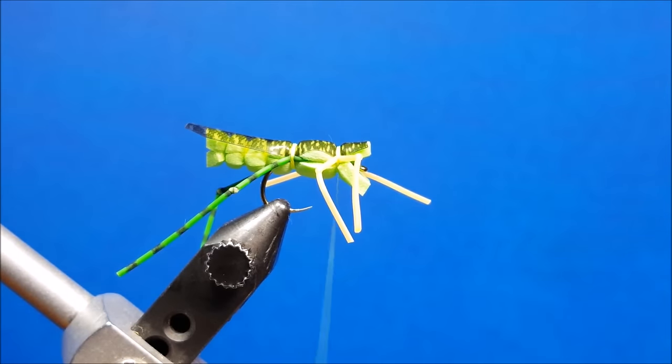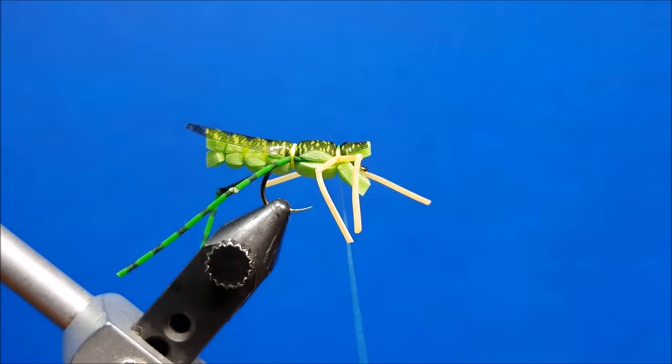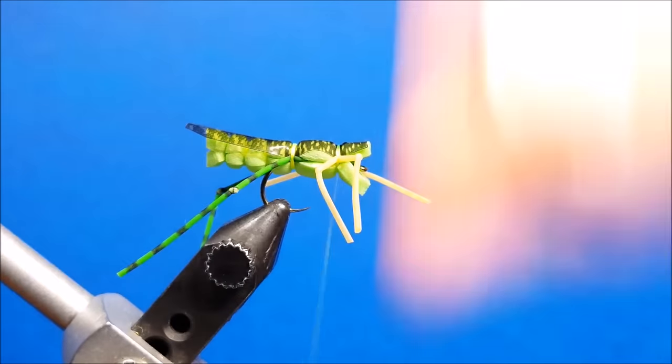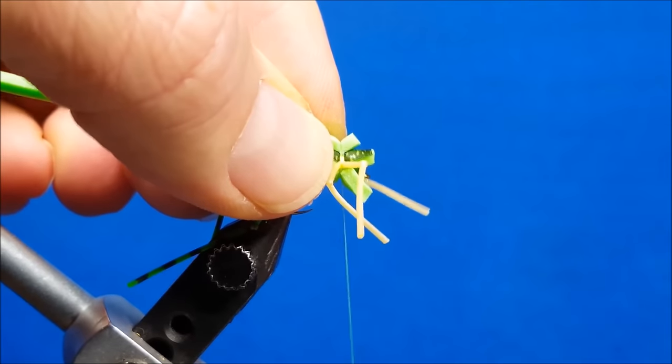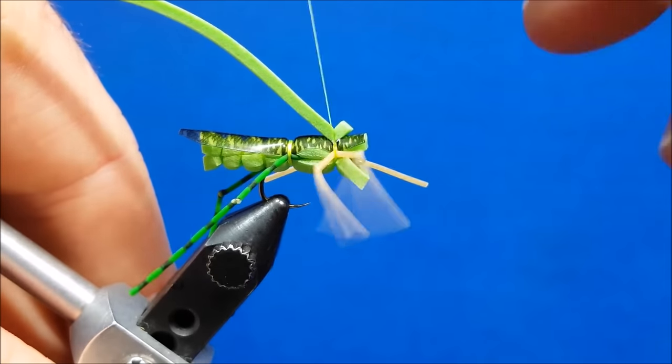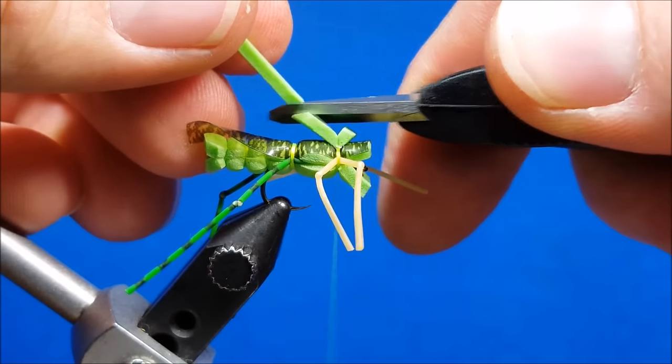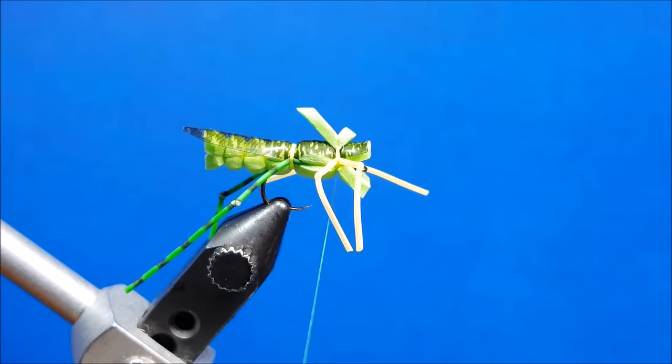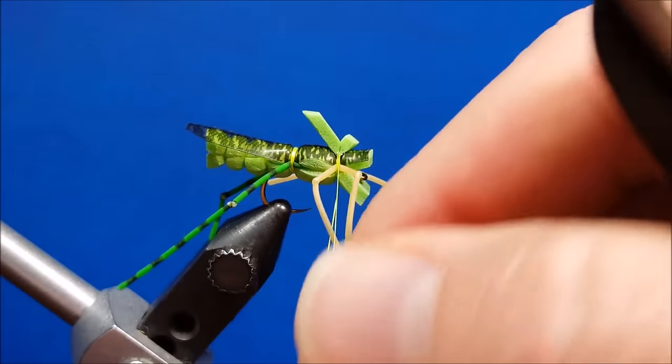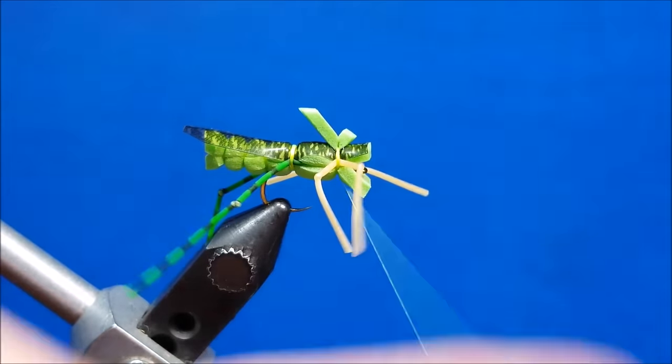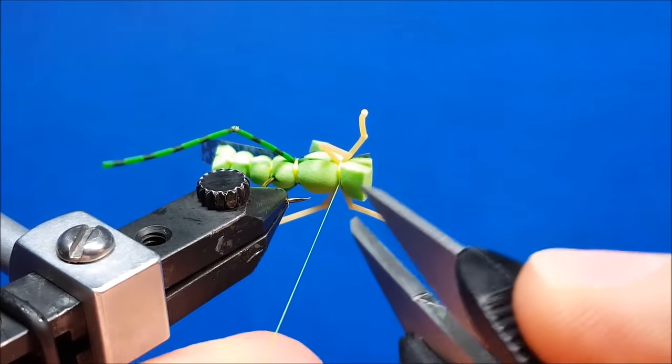Now I'm going to rotate this right side up, come in with my 1 1/8 inch wide of indicator foam, put just a touch of zap-a-gap right on the top there. I want the front of this foam to about meet the front of the head. Cinch it down, get a couple wraps over it. I'm going to come in and snip it off, about a 1/4 inch off the top of the head. Throw in a whip finish or two, go ahead and snip that thread.